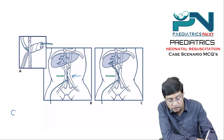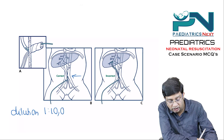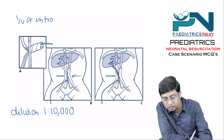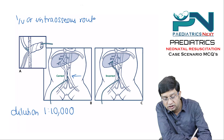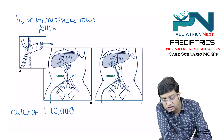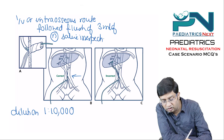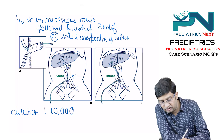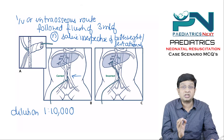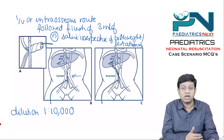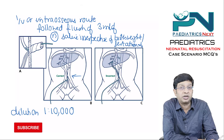The dilution of epinephrine used is 1:10,000. When given by intravenous or intraosseous route, it must be followed by a flush of 3 ml of normal saline, irrespective of birth weight or gestational age. Remember: epinephrine is NOT given by the intra-arterial route — only intravenous, intraosseous, or intratracheal routes are acceptable.